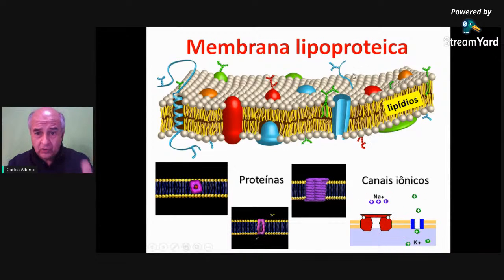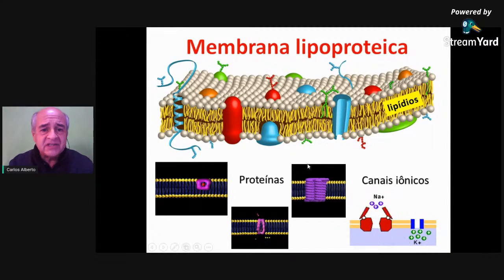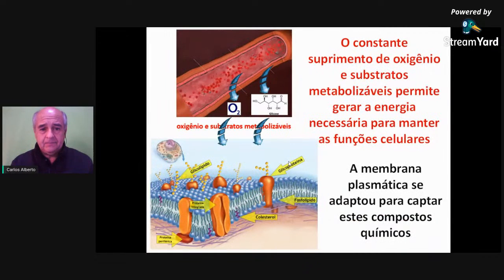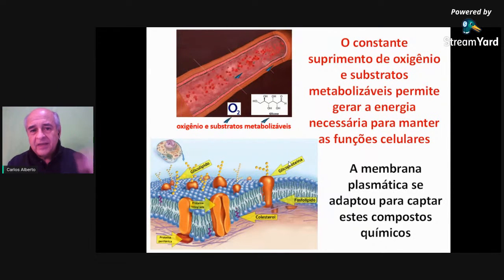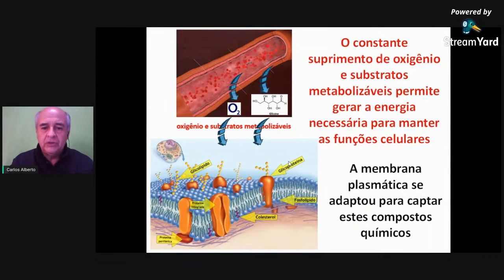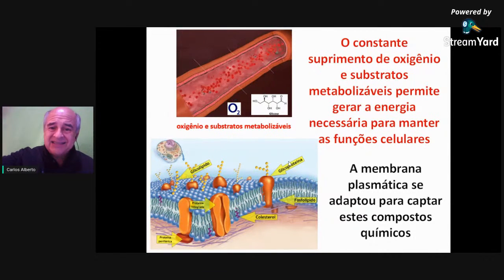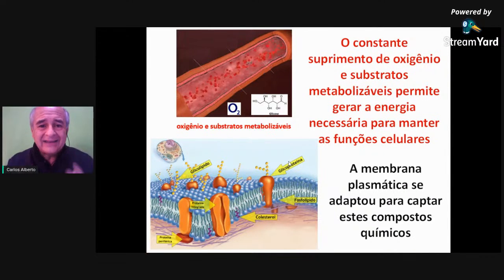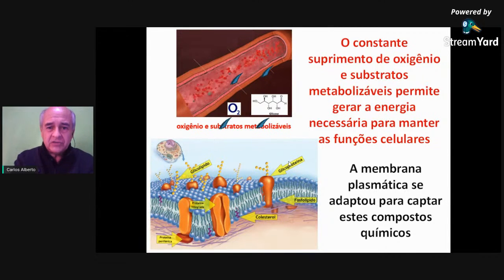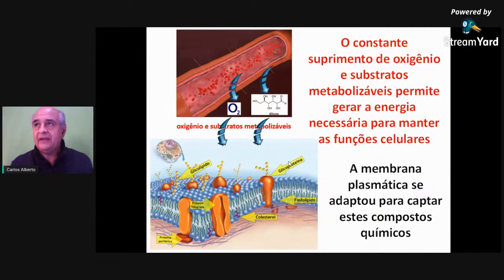A célula desenvolveu canais iônicos — canais de água (aquaporinas), canais de sódio, potássio, cálcio, cloreto. Ou seja, a organização lipoproteica da membrana trouxe informações importantes. Porque aquela célula que precisava só absorver, metabolizar e excretar, agora ela seleciona o que pode entrar, controla, bloqueia, transfere, obedece propriedades lipoproteicas. Substâncias muito lipossolúveis dissolvem na membrana e atravessam entre os compartimentos. Substâncias pouco lipossolúveis precisaram desenvolver sistemas mais refinados. Constantemente está chegando oxigênio na célula, e oxigênio é muito lipossolúvel, então entra na célula com facilidade e desencadeia respostas ligadas ao metabolismo e produção de energia.